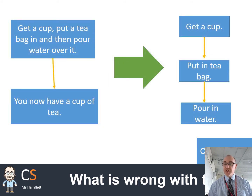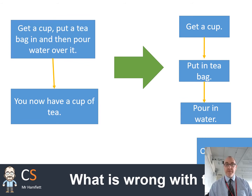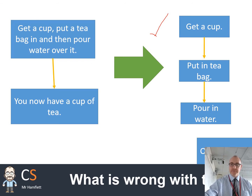So this is what it should look like. You get a cup, put a tea bag in, pour the water — three separate boxes. This is obviously the correct way of doing it.